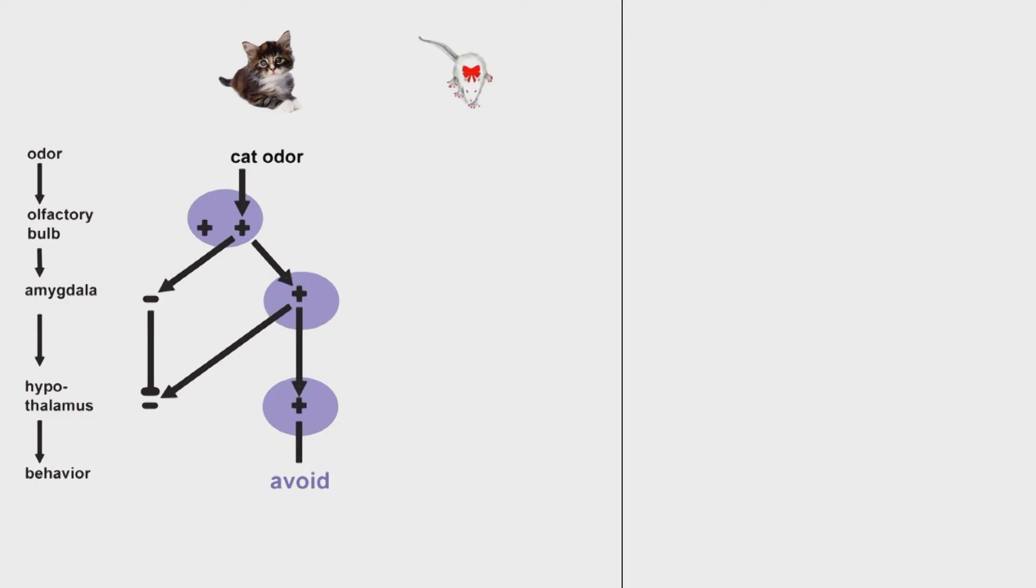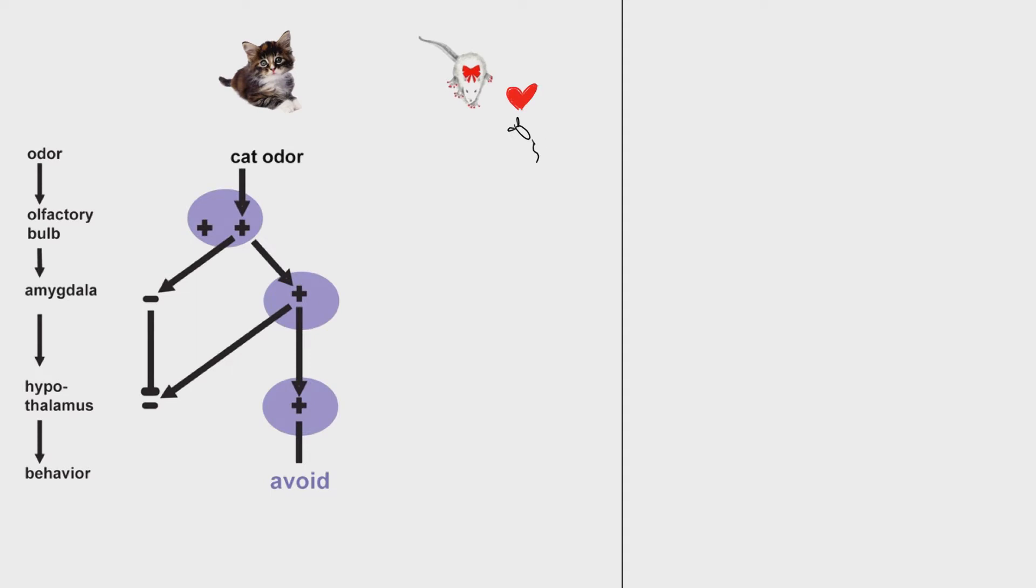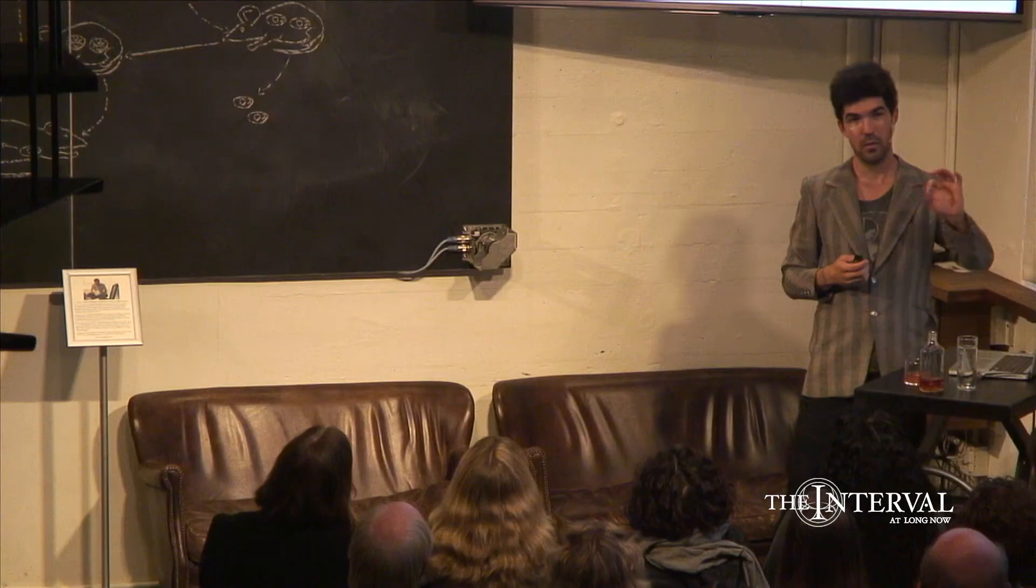This looks different from a male rodent exposed to an estrous female. This is sexual attraction. Again, neural activity courses through the brain in an almost reflexive response, but the behavior is different—you end up with attraction.